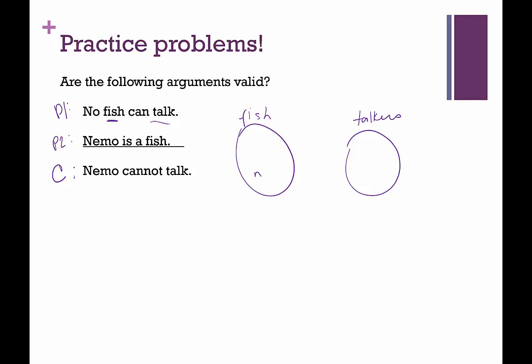And then therefore Nemo cannot talk. Is this argument valid or not? Yes, because it says no fish can talk. There's no overlap between these two sets. There's no debate about where Nemo belongs. This argument is valid.